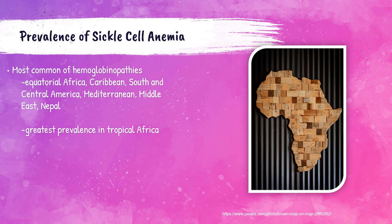Sickle cell anemia is the most common of all hemoglobinopathies in the world. Its greatest prevalence is in tropical Africa, but it's also found commonly in equatorial Africa, the Caribbean, South and Central America, as well as the Mediterranean, Middle East, and Nepal.